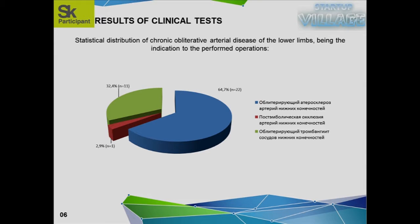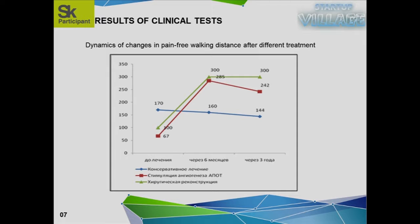This slide shows the types of vascular diseases where you can use our technology: vascular atherosclerotic vessels, inflammatory conditions, and lower limb clotting. We use the conservative treatment of angiogenesis stimulation and the surgical restitution of the vessels by way of reconstruction. So we use conservative therapy and then we stimulate angiogenesis, or we do the surgical reconstruction of the vessels.